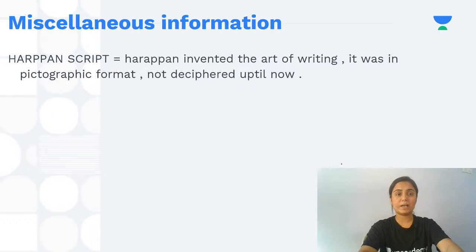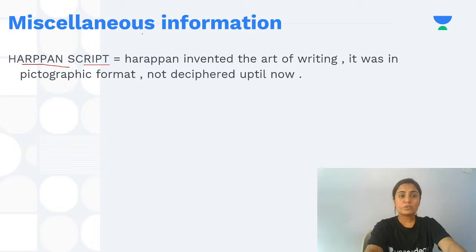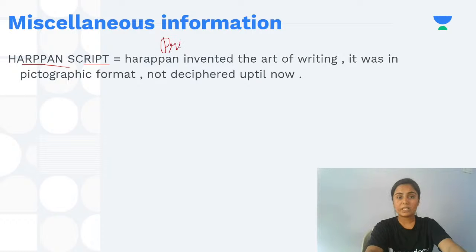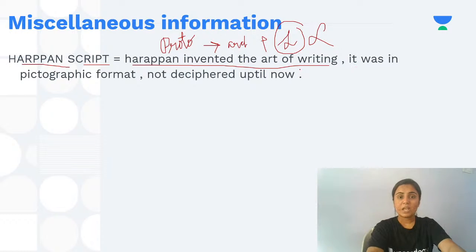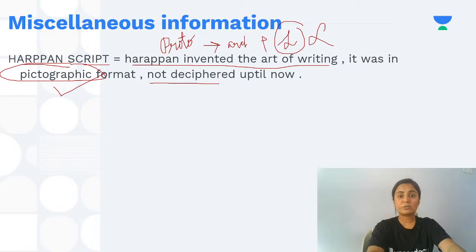Regarding the Harappan script: this period is called proto-history — archaeological evidence exists alongside literary sources, but those literary sources have not been deciphered. Harappans invented writing, but it was pictographic in form and has not been deciphered until now.